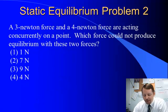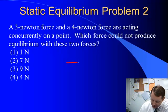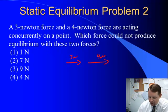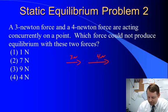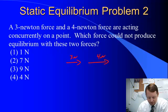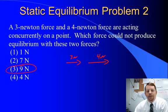Final problem: a 3-newton force and a 4-newton force are acting concurrently on a point. Which force could not produce equilibrium with these two forces? Since 3 + 4 = 7 newtons, any force greater than 7 newtons cannot be the equilibrant. Therefore, 9 newtons could not put those forces into equilibrium. Have a great day.